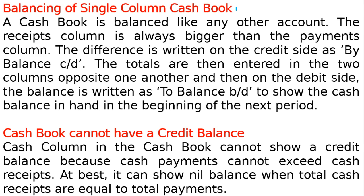Balancing of a single column cash book: it is balanced like any other account. The receipt column is always larger than the payments column. The cash book balance is either zero, a debit balance, or nil — never a negative. The difference is written on the credit side as 'by balance c/d'. The totals are then entered in the two columns opposite one another, and on the debit side the balance is written as 'to balance b/d'.